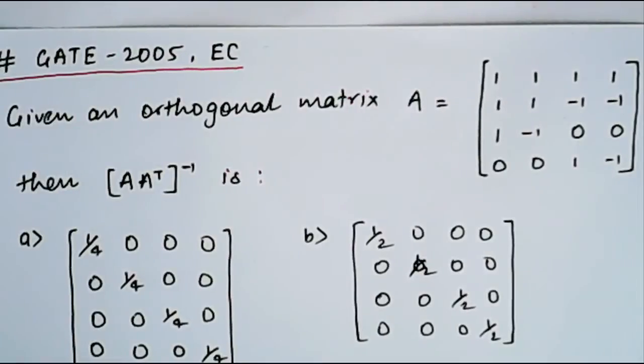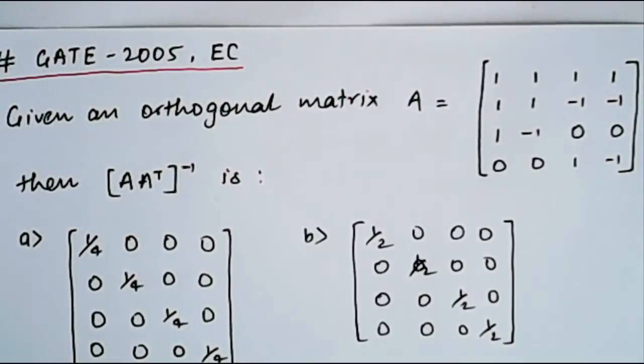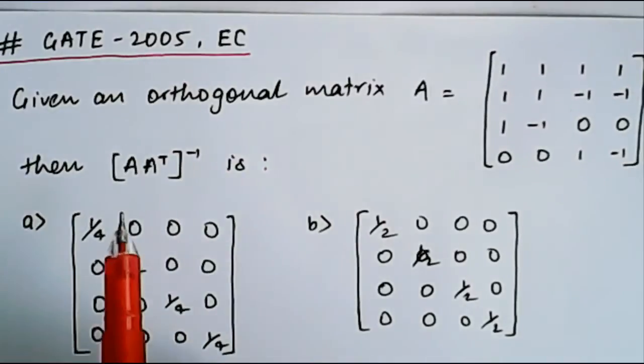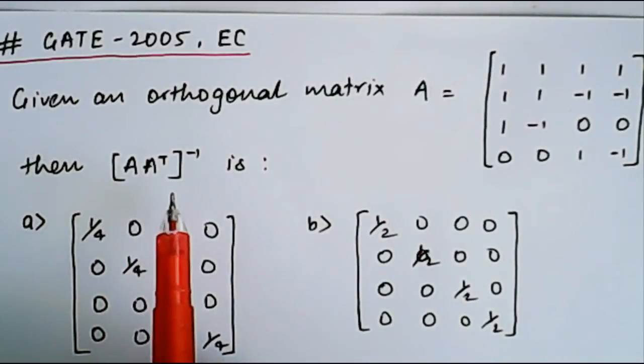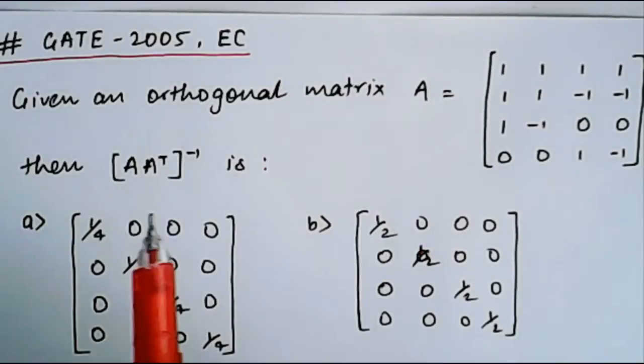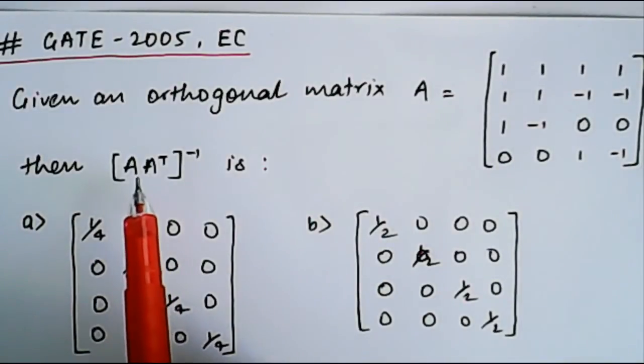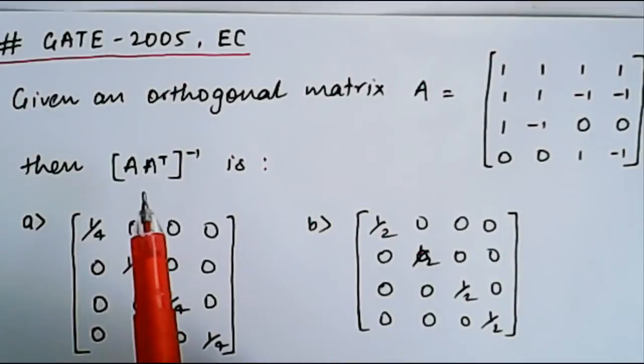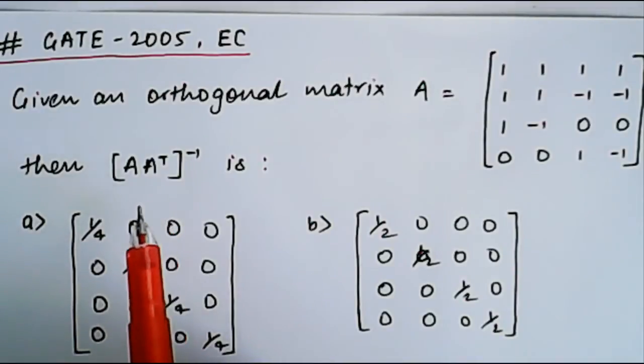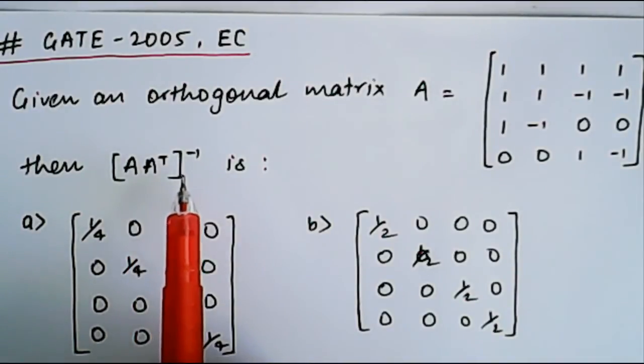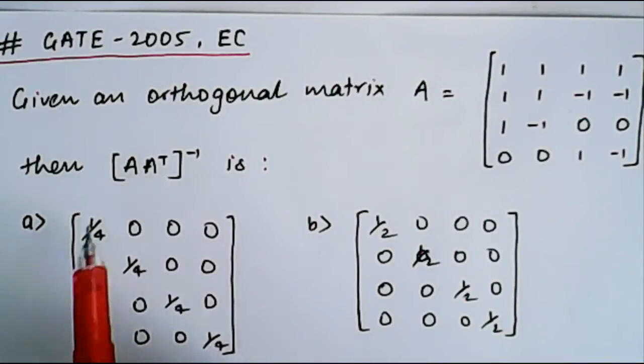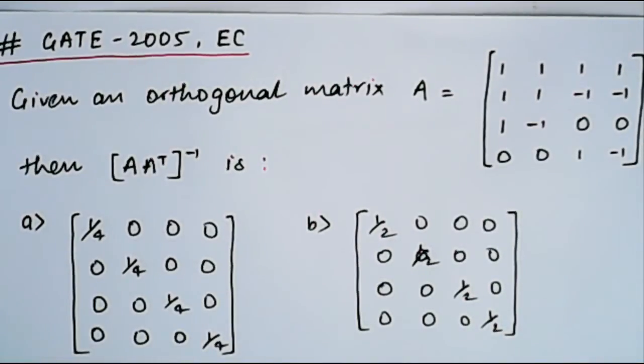Now this question was asked for two marks. But if you understand this question, what you will have to do? You will have to first take transpose of A, then multiply as matrix multiplication, and finally take inverse and then compare which one is equal. But if you remember the properties, the problem solving will become very easy.